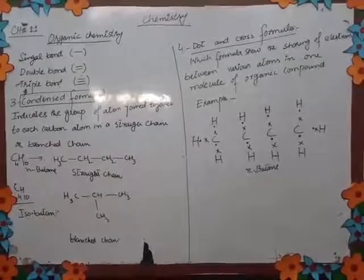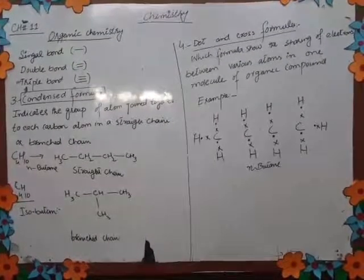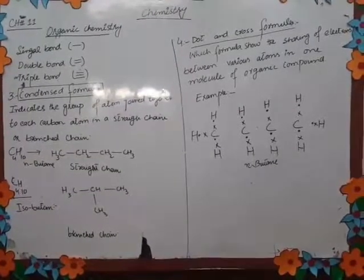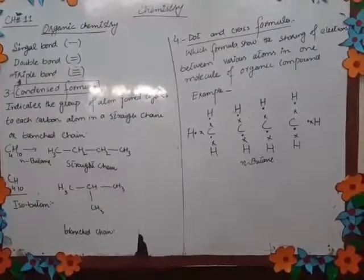The structure of the branch chain is shown by the value of the formula. The other formula is shown in the structural line, which shows the arrangement between various atoms in one molecule of an organic compound, and is called dot and cross formula.